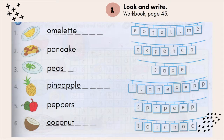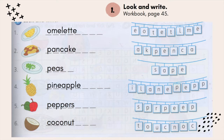Number 2: pancake — one word. Number 3: peas. Number 4: pineapple — P-I-N-E-A-P-P-L-E. Number 5: peppers — P-E-P-P-E-R-S. And the last one is coconut. You can pause this part and practice to pronounce all the words.